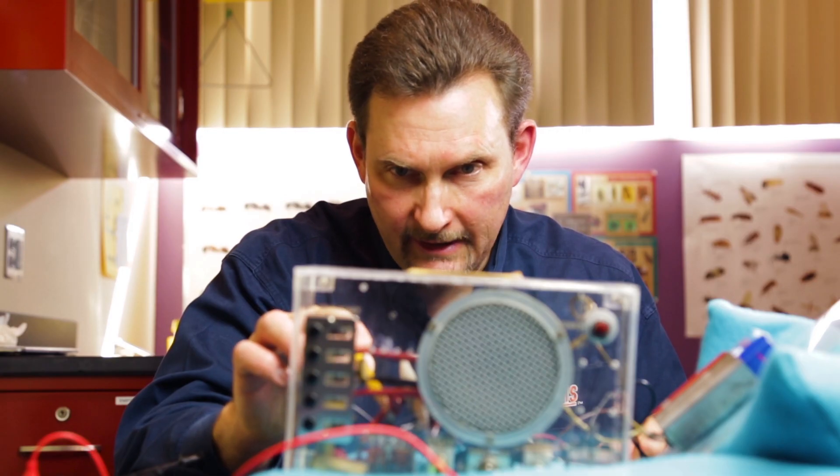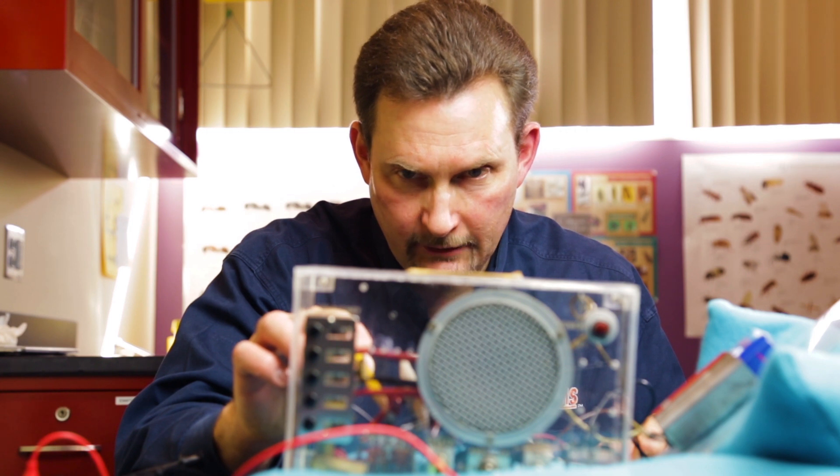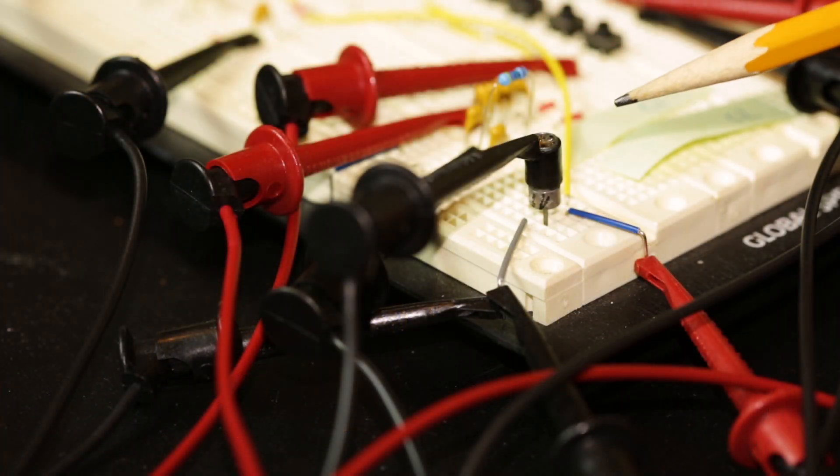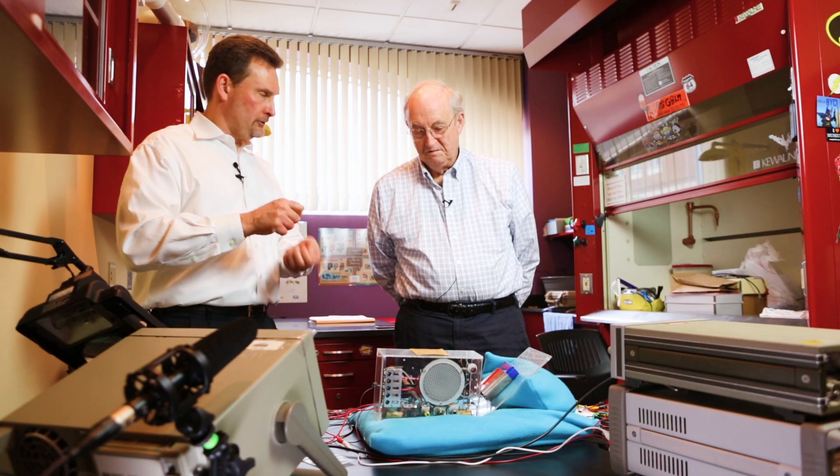The original point-contact transistor on the oscillator side failed, and so we actually were able to jumper in another point-contact transistor that was lent to us by Bill Bardeen, John Bardeen's son.